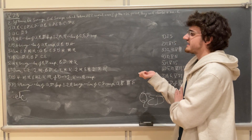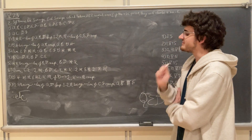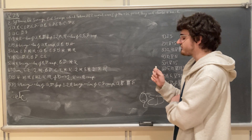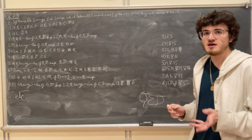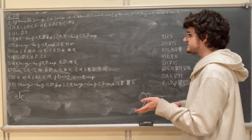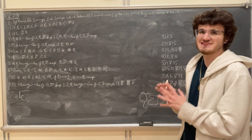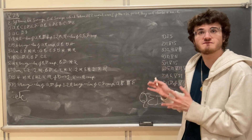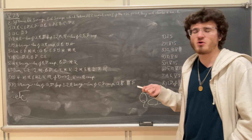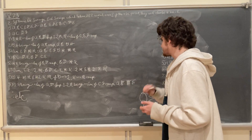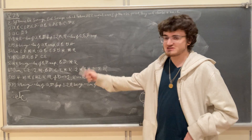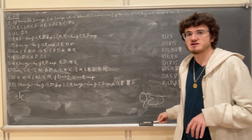G and K are equal multiples of A and D respectively, and L and N are equal multiples of C and F respectively — we made them that way — which means we have the conditions necessary to make a proportion. By Definition 5.5, the magnitudes of which they are equal multiples are proportional, so we can say that A is to C just as D is to F. This is what we set out to prove, therefore Q.E.D.